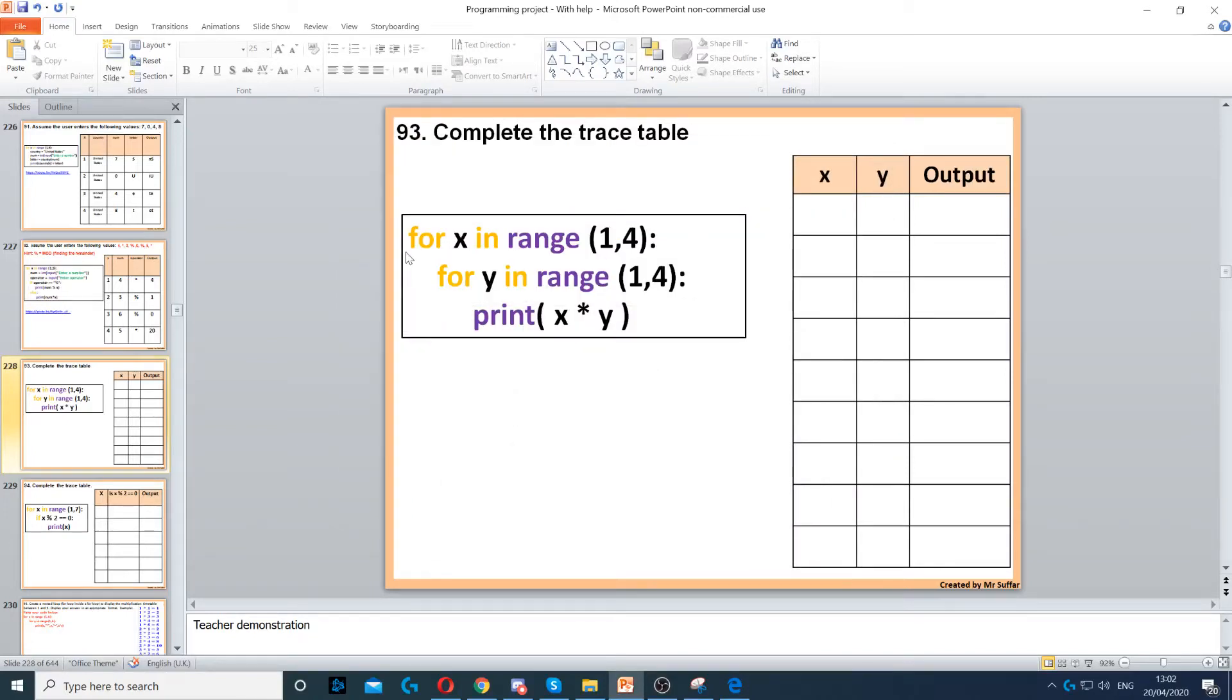For this example, we need to complete this trace table with a nested for loop, so a for loop inside another for loop. This is quite tricky. It starts with for x in range 1 to 4, so x will start with 1. Then it says for y in range 1 to 4, so y is now 1, starts with 1.